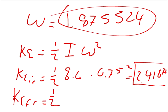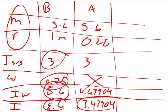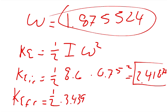Then we can find the kinetic energy in the final state, or the rotational energy is 1/2 times, and now we said that I final was 3.43904, so times 3.43904, times the angular velocity squared, so times 1.875 squared.